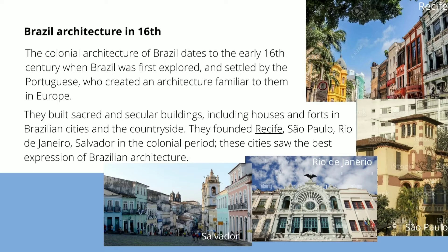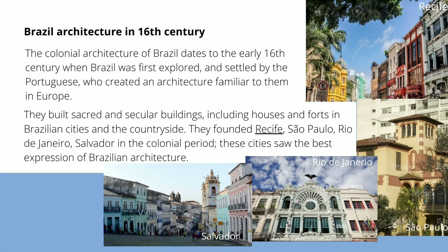The colonial architecture of Brazil dates to the early 16th century, when Brazil was first explored, conquered, and settled by the Portuguese, who created an architecture familiar to them in Europe. They built sacred and secular buildings, including houses and forts in Brazilian cities and the countryside.